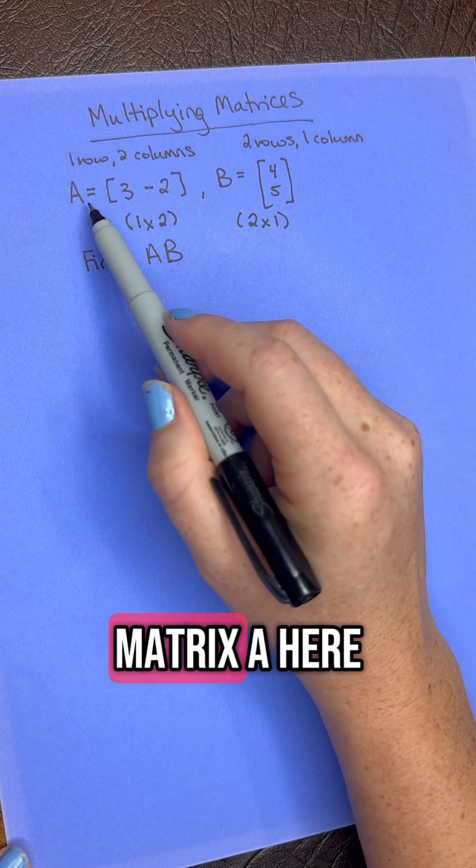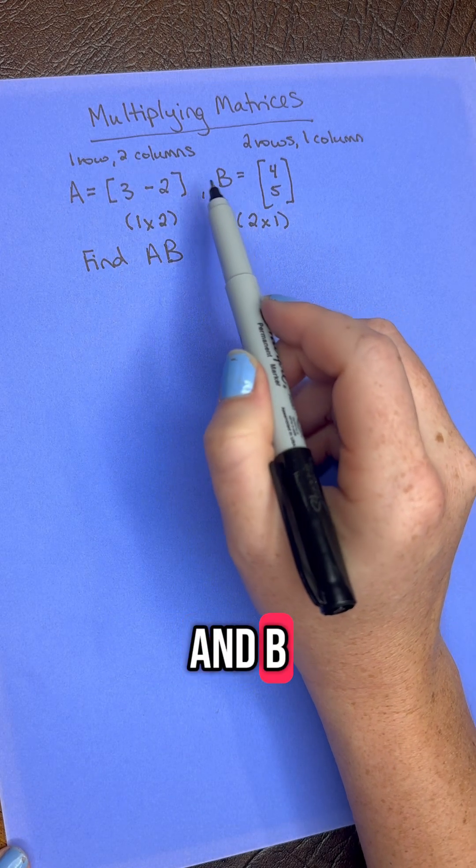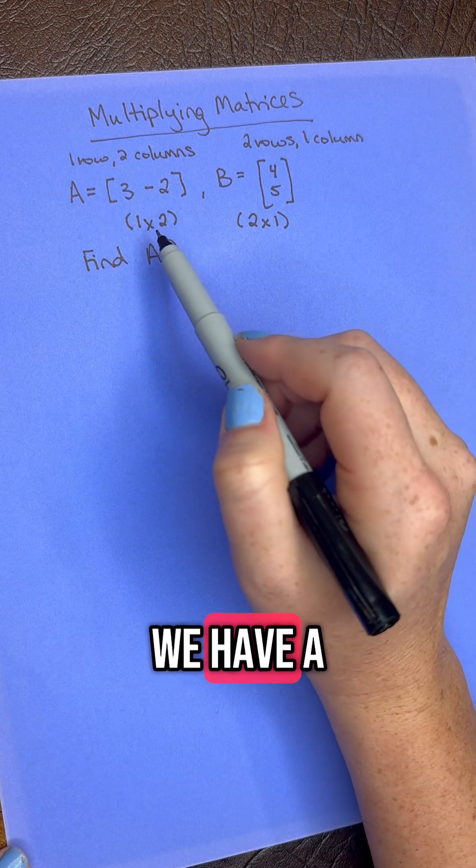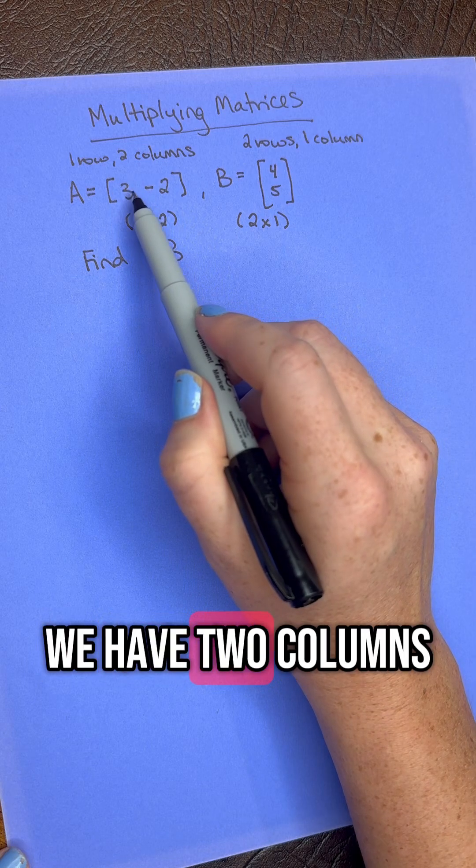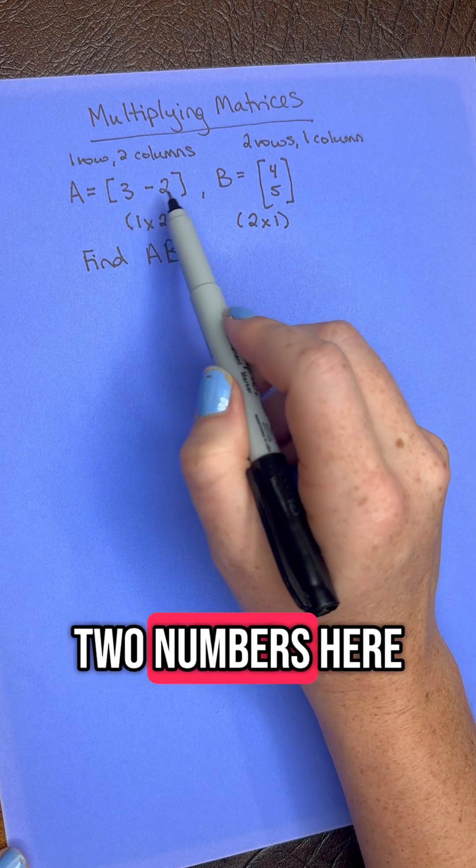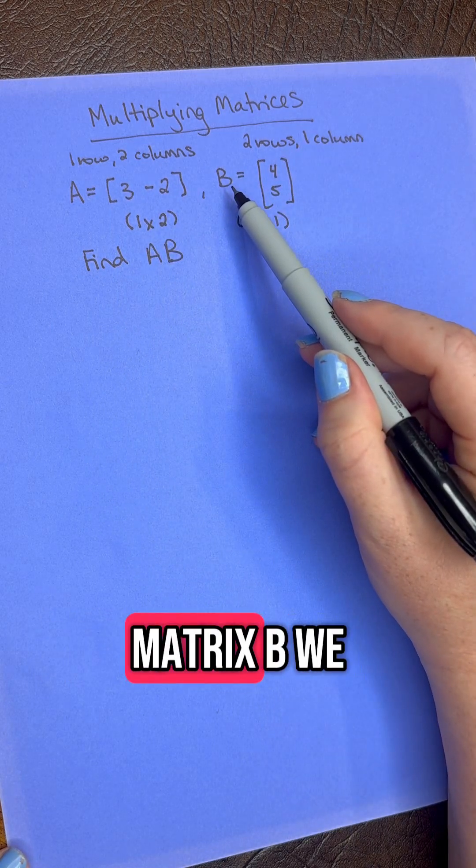So we have matrix A here and B. For A, we have a 1 by 2 matrix because we have one row, but we have two columns because we have two numbers here. And then for matrix B,